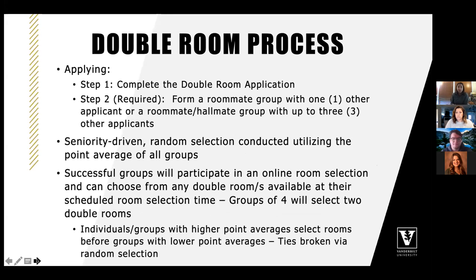The double room process follows a similar structure. You must form either a roommate group with one other student as a pair, or a hallmate group of four students. We run a seniority-driven random selection using the point average of all members. Successful groups participate in online room selection — groups of two select one double room, and groups of four select two double rooms.